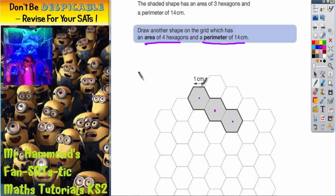The perimeter of 14 is when you count around the outside, because that's what perimeter is - the distance around the outside. So we've got 1, 2, 3, 4, 5, 6, 7, 8, 9, 10, 11, 12, 13, 14 sides.